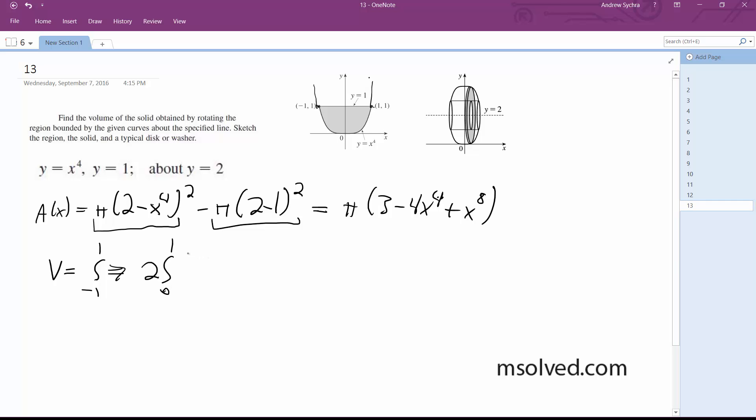...it's better to make this 2 from 0 to 1, because otherwise if we use negative 1, we'll cancel out our results. So this is 2 pi, and we get 3 minus 4x to the 4th plus x to the 8th dx.